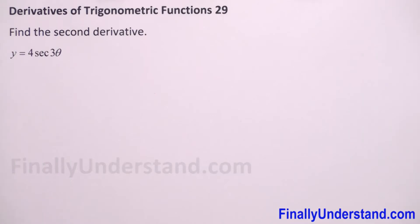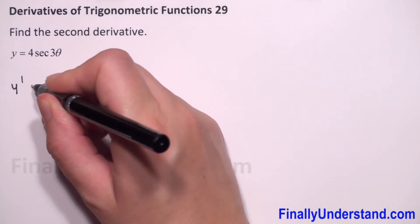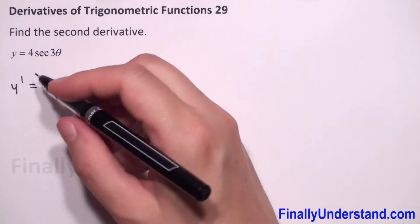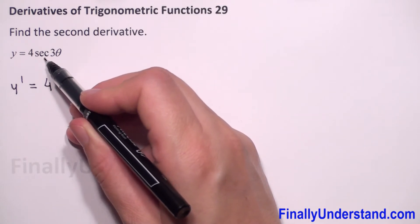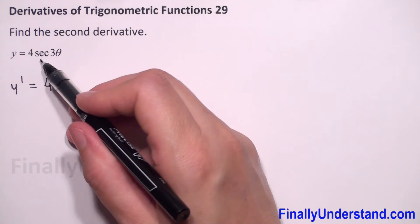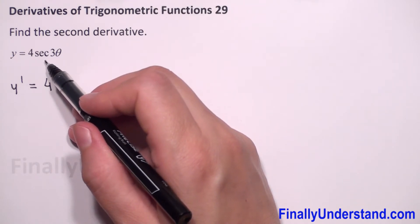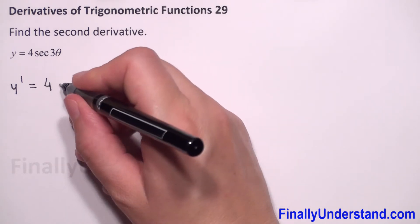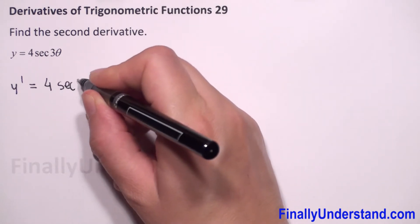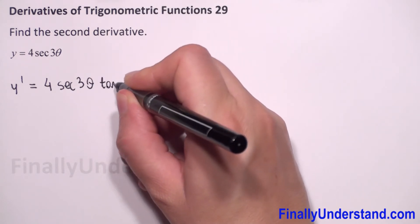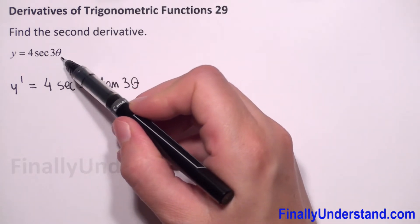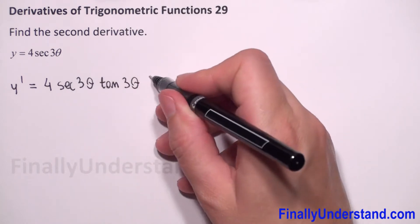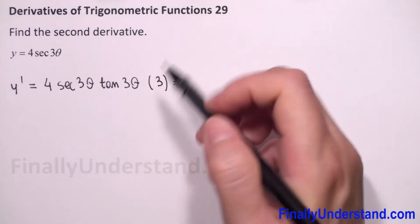We have to find the second derivative, which means first we have to find the first derivative of our function. y prime is equal — when we have a constant number we always copy this number. We have a composite function, so first we have to find the derivative of the outside function. Secant is outside; the derivative of secant is secant times tangent. So we have secant(3θ) times tangent(3θ), and now we have to find the derivative of 3θ, which is just 3.